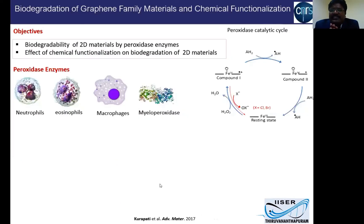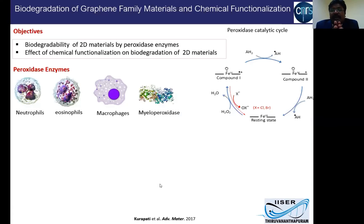With these aspects in mind, we set two objectives: first, to check the biodegradability of 2D materials including graphene and graphene oxide by various peroxidase enzymes; and second, to check what effect chemical functionality has on the degradation of 2D materials.